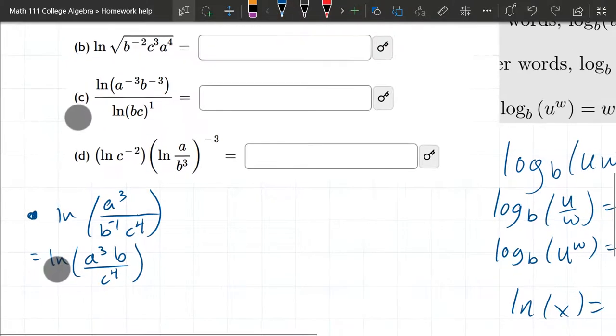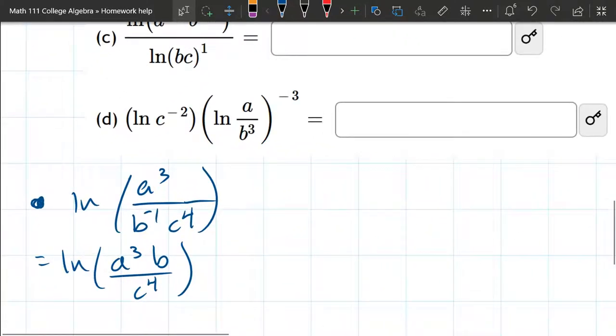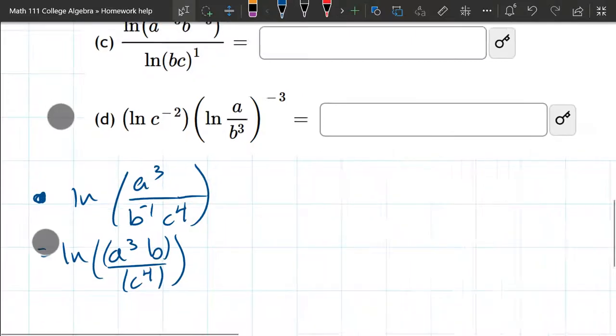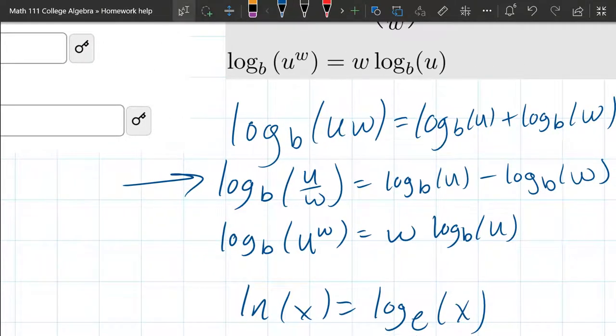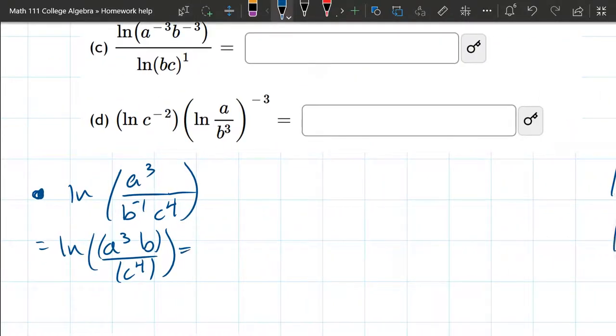What properties are we going to use next? Well, we have to decide what operation is happening here. If I put some extra parentheses for grouping, we see division is happening. And looking over here, division right here is division inside, is subtraction outside. So we're about to use that property. So this is ln of A cubed B minus ln of C to the 4th. It's subtraction because you had division in here.